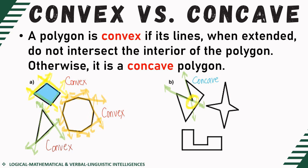Now let's proceed to the second figure. It looks like a star. In the same manner, as you can see, the extended part passes through the interior points of the given figure. So that means we will consider this as a concave polygon as well.